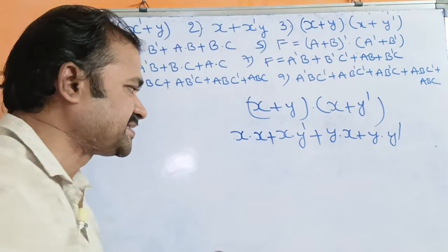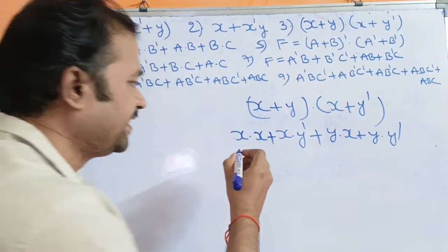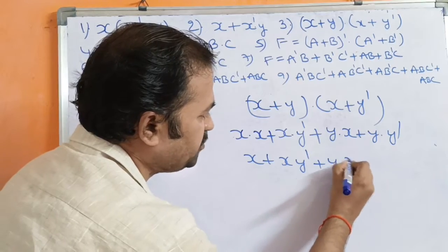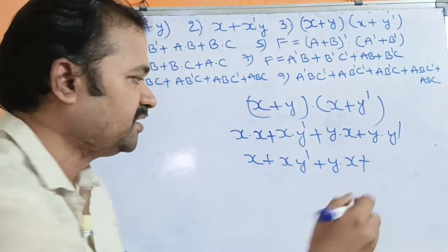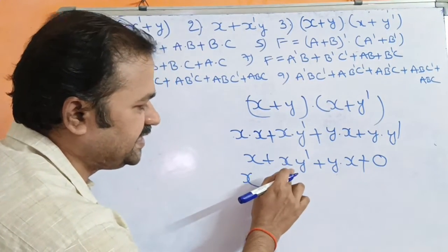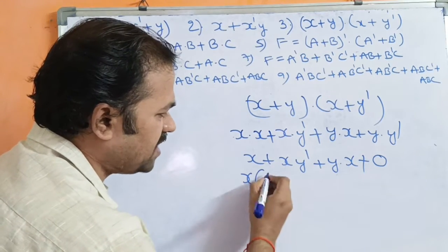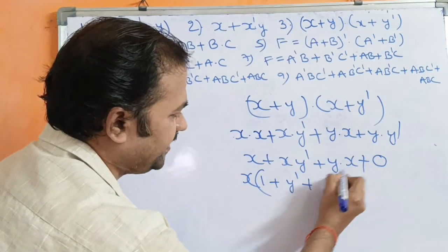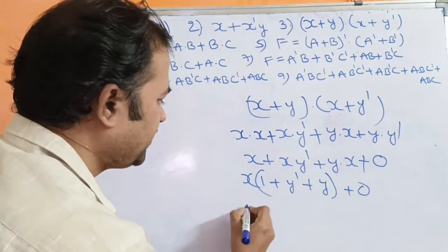X·X by idempotent law equals X. Also Y·Ȳ = 0. So we have X + X + XȲ + YX + 0. Observing these three X terms, X is common, giving X(1 + Ȳ + Y).